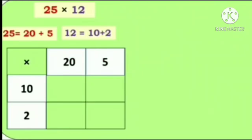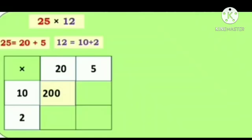Now, first we will write 20 and 5 in these boxes and 10 and 2 in these boxes. Now we will start the multiplication. First, we will multiply 10 into 20. Answer is 200.